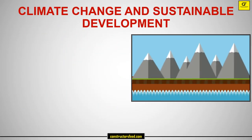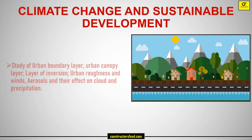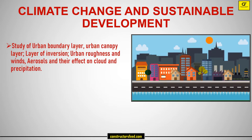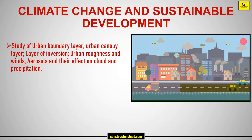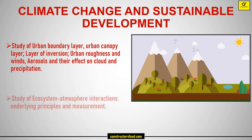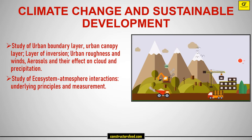Climate Change and Sustainable Development: study of urban boundary layer, urban canopy layer, layer of inversion, urban roughness and winds, aerosols and their effect on cloud and precipitation. Study of ecosystem-atmosphere interactions, underlying principles and measurement.